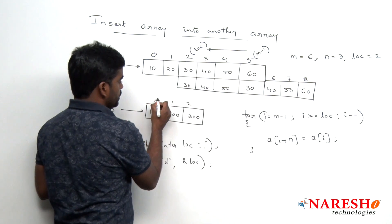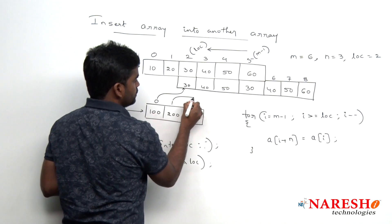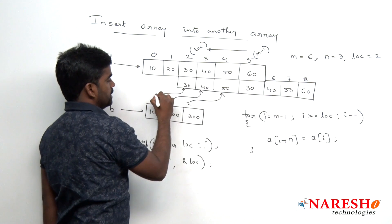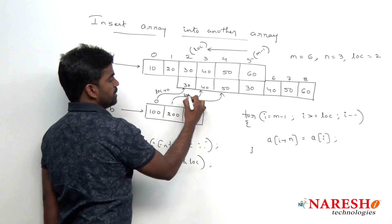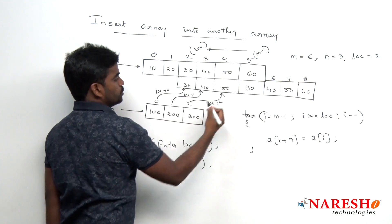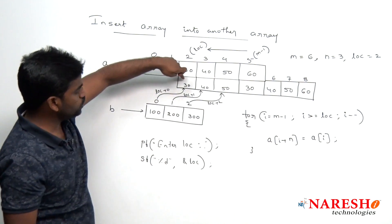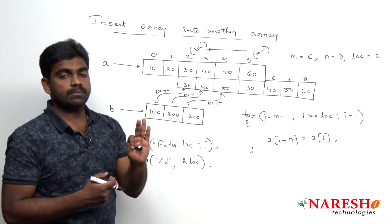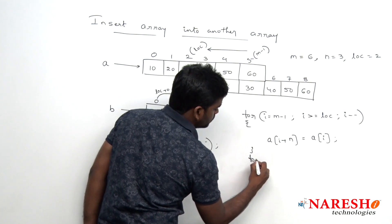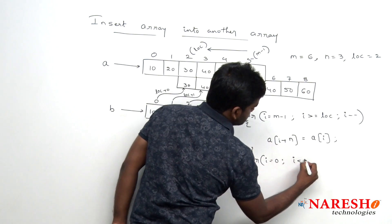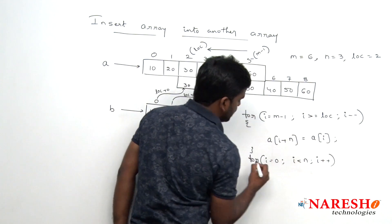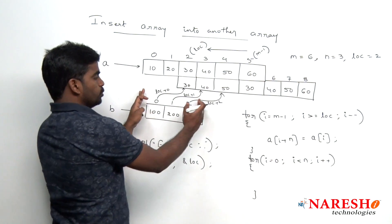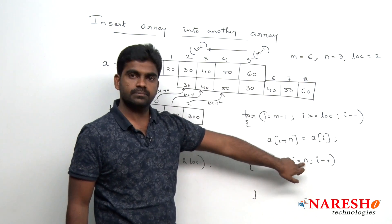After shifting, we insert the elements. The 0th element of b goes into location plus 0, the 1st element into location plus 1, and the 2nd element into location plus 2. We use a second for loop: i starts from 0, condition i less than n, and i increment. The statement is a[location + i] = b[i]. With n equal to 3, the index goes from 0 to 2.